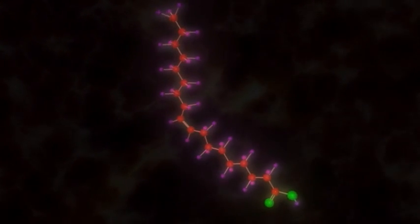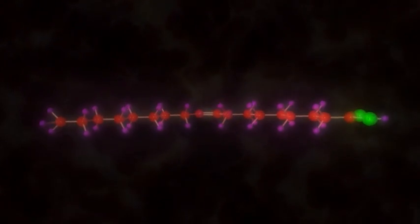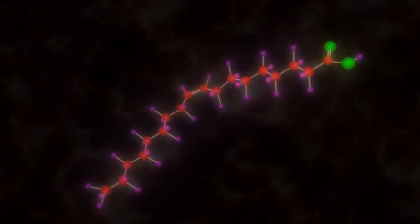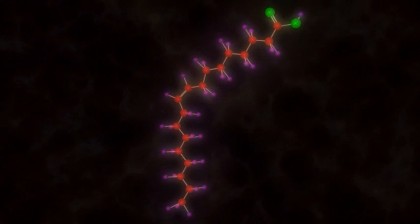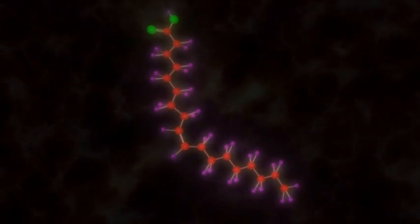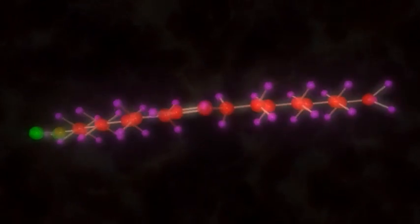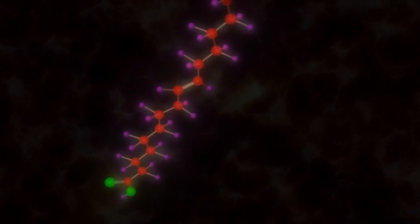Also notice that the carbon double bond causes a kink in the carbon chain. All naturally occurring fatty acids with a double bond have a kink in their shape at the location of the double bond. But it is possible to manufacture fatty acids that are transformed in shape to do away with that kink.